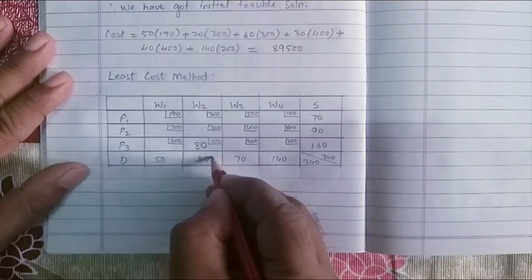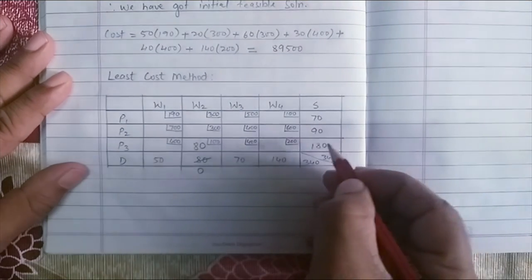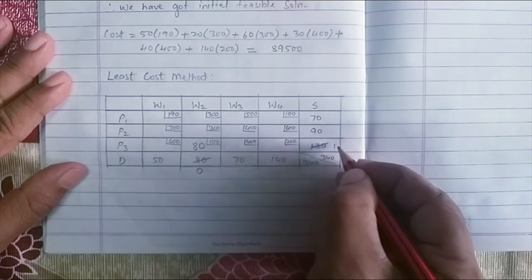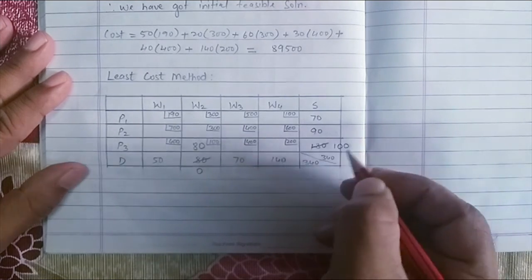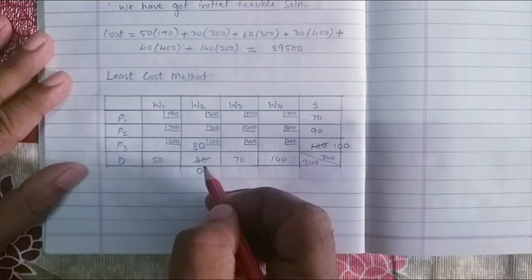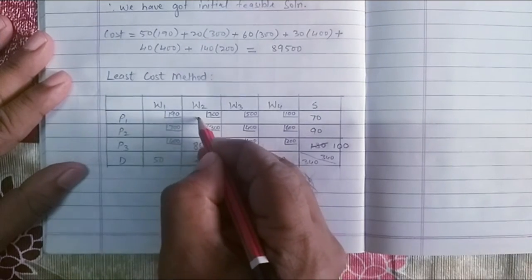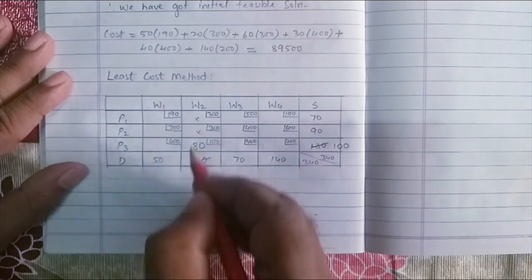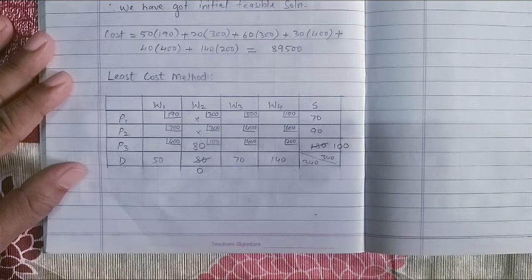Subtract 80 from my demand. This becomes 0. Subtract from 180 and I get 100 here and the column W2 will have no more allocations. So I need to cross this out.